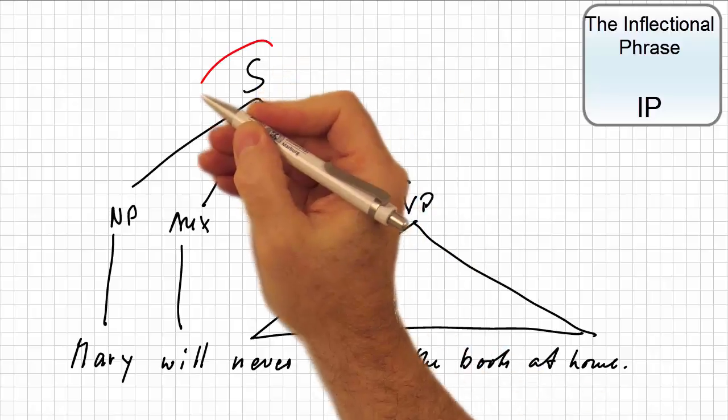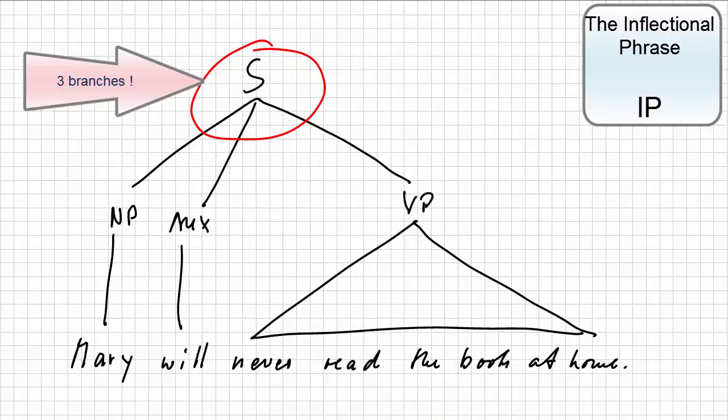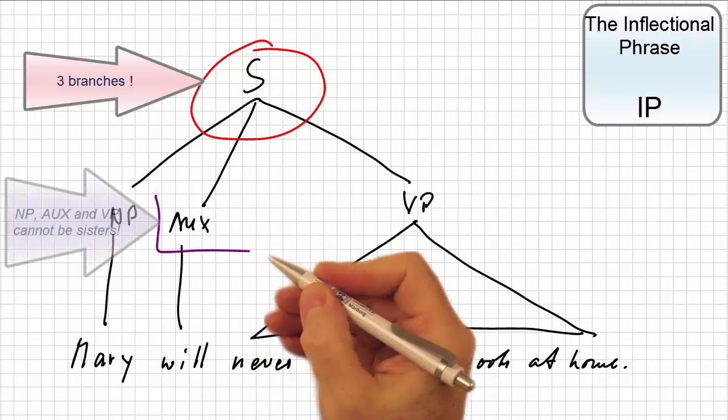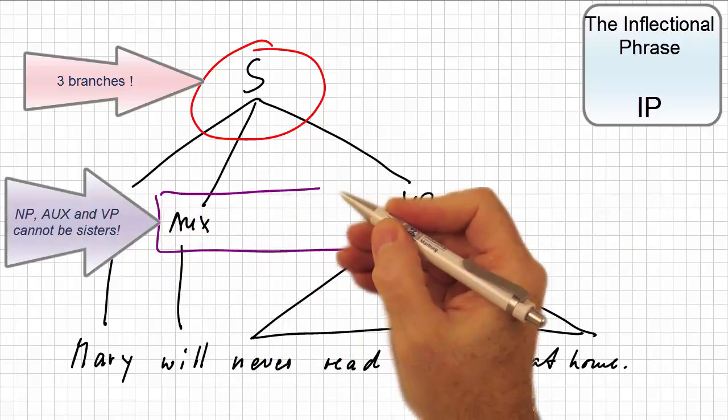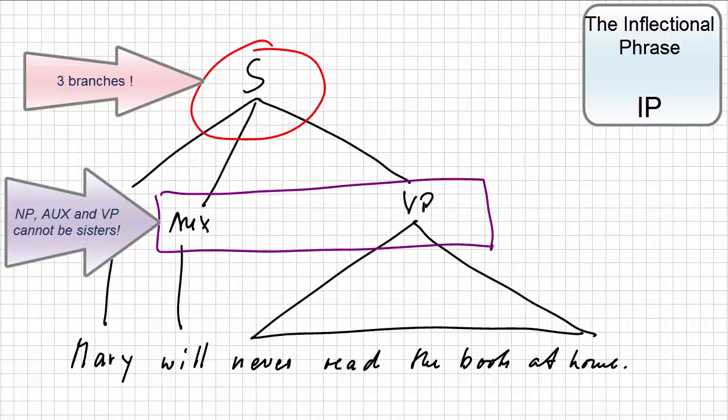First, the S constituent would be the only one that allowed for more than two branches. And secondly, there are arguments suggesting that the auxiliary verb and the verb phrase have to be treated as a constituent independent from the subject noun phrase.